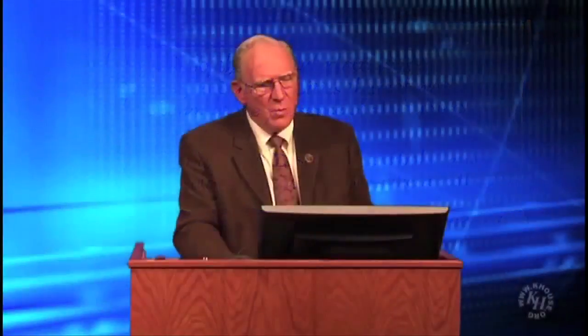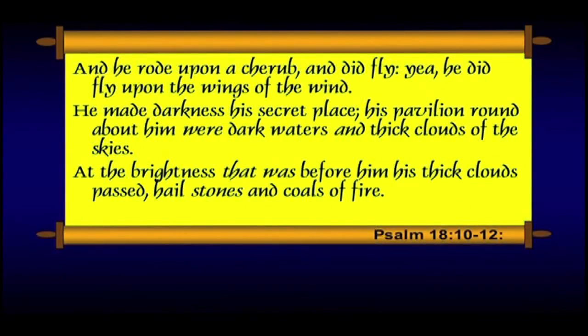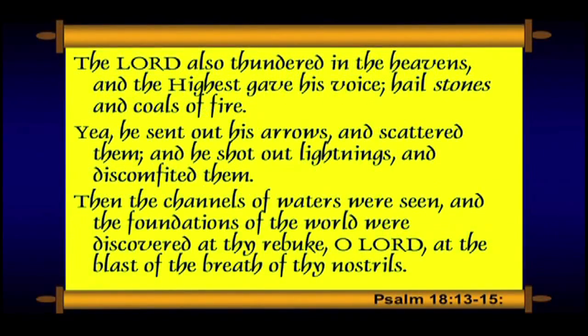Let's look at Psalm 18: 'Then the earth shook and trembled and the foundations of the hills were moved and were shaken because he was wroth, and there went up a smoke out of his nostrils and a fire out of his mouth devoured — coals were kindled by it. He bowed the heavens also and came down and darkness was under his feet. He rode upon a cherub and did fly upon the wings of the wind. He made darkness his secret place. His pavilion round about him were dark waters and thick clouds. The Lord also thundered in the heavens — hailstones and coals of fire. He sent out his arrows and scattered them. Then the channels of the waters were seen and the foundations of the world were discovered at thy rebuke, O Lord.' Sounds like a cosmic judgment of some kind. What historical event explains this?